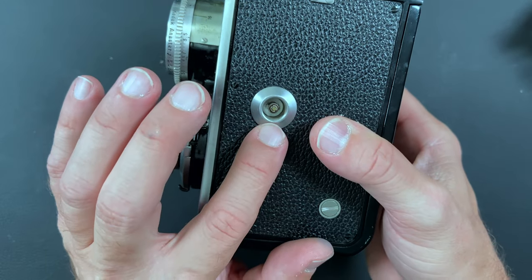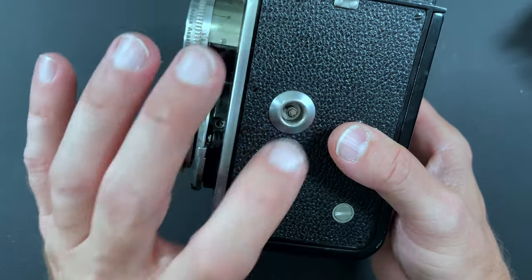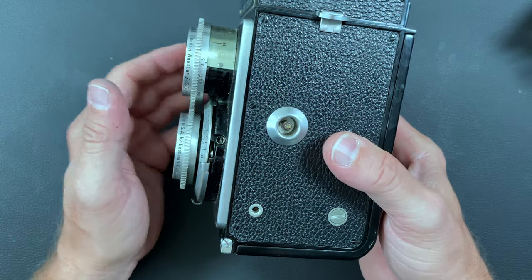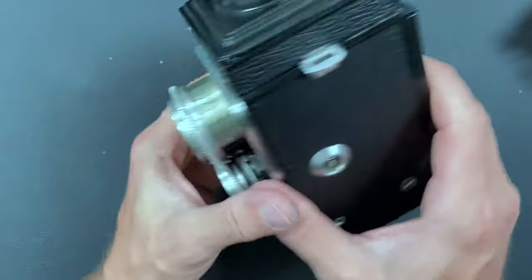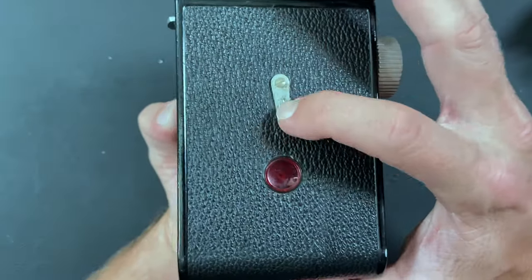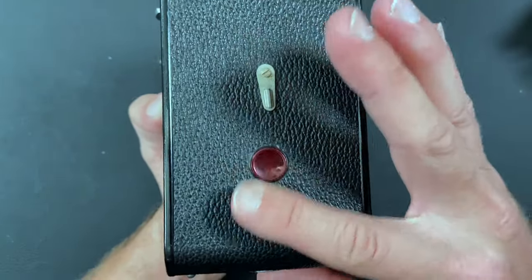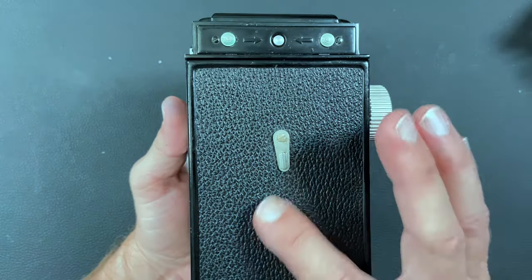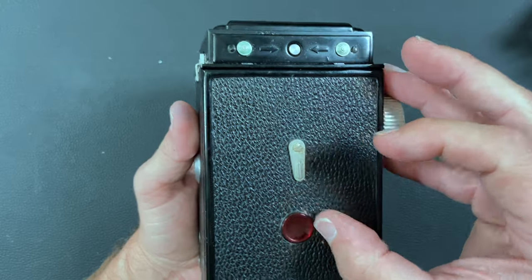It also has a little coaxial connection here for a flash if you wanted to have a flash on there. So there's a little window back here. So you could see your film number as it slides across like other 620 and 120 film cameras, a little Kodak red window.